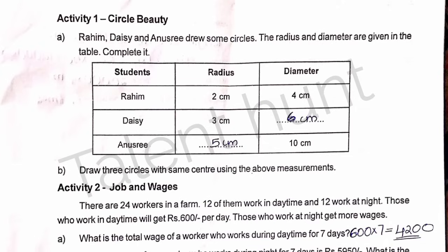The diameter is twice the radius. The diameter is 3 times — that is 3. If the radius of the circle is 3 cm, then the diameter is 3 x 2. And if the radius of the circle is 5 cm, the diameter is 10 cm. If the diameter is 10 cm, then the radius is 5 cm.